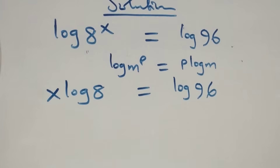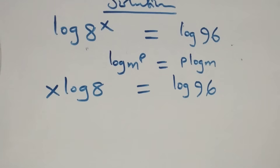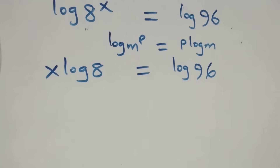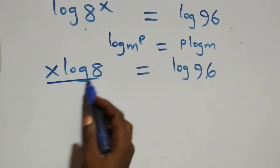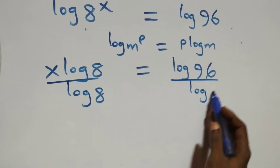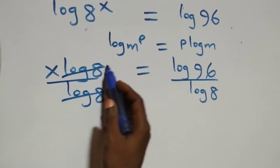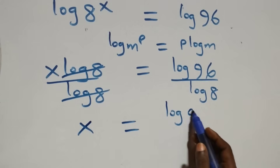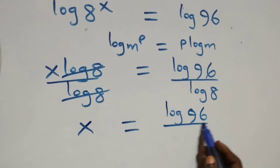You're watching Master Team. Don't forget to subscribe and click the notification bell. Thank you for your support. The next step: we divide both sides by log 8. Log 8 cancels on the left, and we have x equals log 96 over log 8.